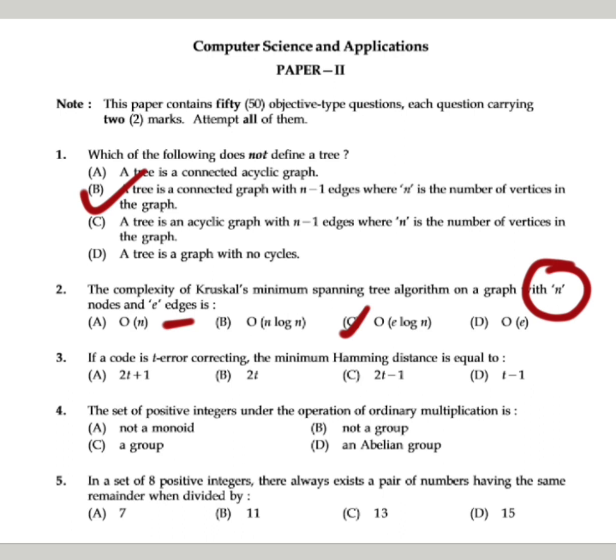The next question is related to minimum hamming distance, which is part of your computer network error correction codes. If a code is t error correcting, the minimum hamming distance is equal to - this is a direct formula. The option is correct: that is t error code which can detect, minimum hamming distance will be 2t plus 1.